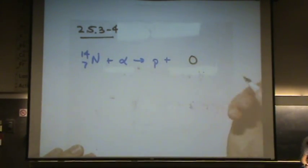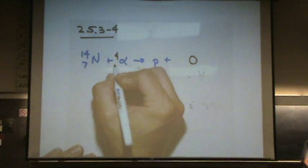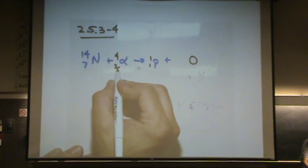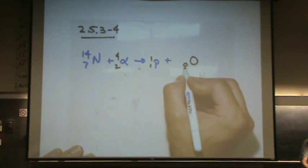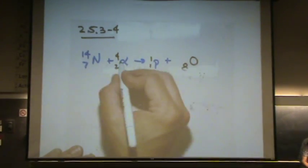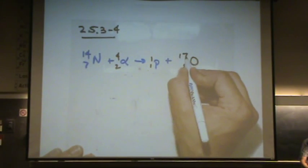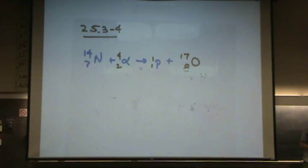Okay, we've got oxygen. So this is 4 and 2, this is 1 and 1. So it's 9 on the left together and it's 9 on the right, so you need an 8 here, that's why it's oxygen. On the top, 18. On the left, on the right, 1 plus 17 will be 18. So it's an isotope of oxygen.